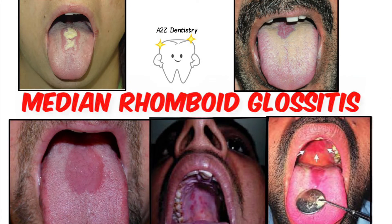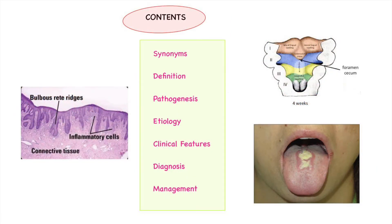Welcome back to A2Z Dentistry. Today's topic is median rhomboid glossitis. We will be studying it under the following subheads: synonyms, definition, pathogenesis, etiology, clinical features, diagnosis, and treatment plan.